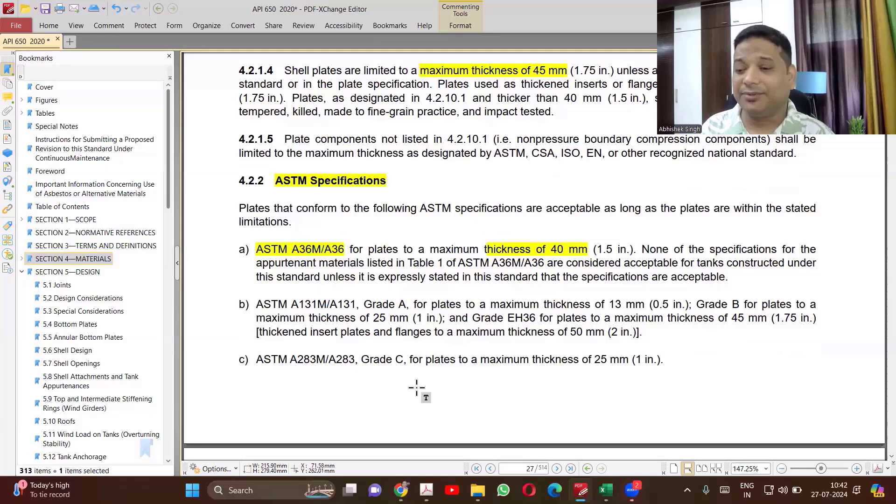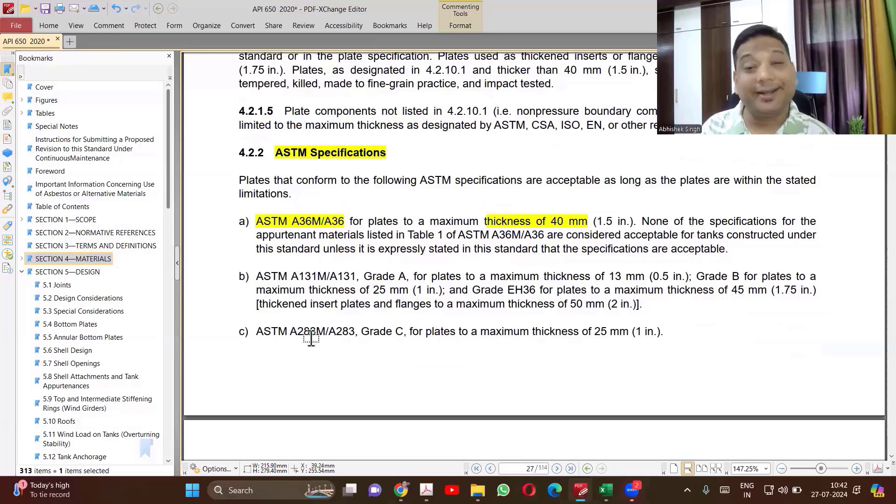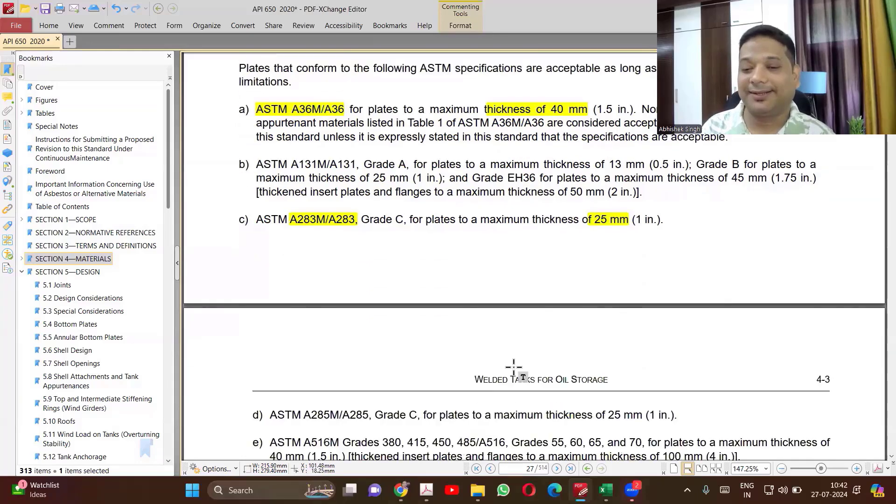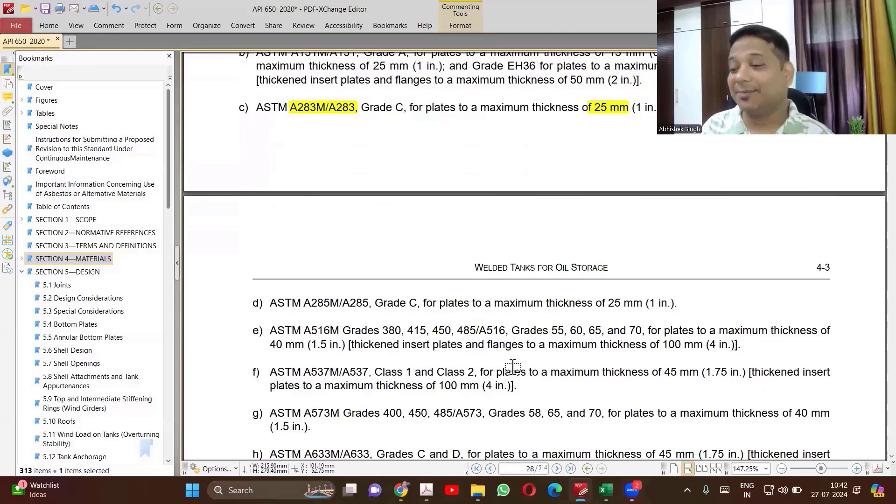131, very rarely we use. 283 is again a common material, but not definitely as A36, but it is also very common tank material. But if you are following this, it is limited only to 25 mm. So only 25 mm. If your maximum thickness is 25 mm, then only you can follow. If it is exceeding, then you have to change the material.